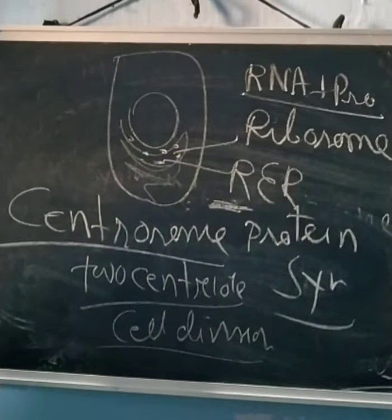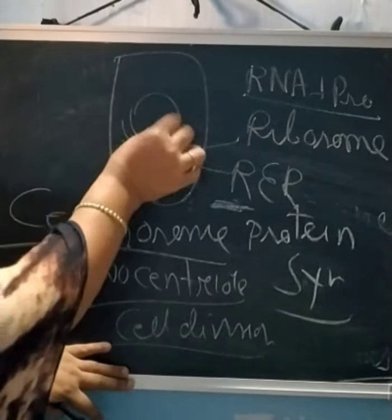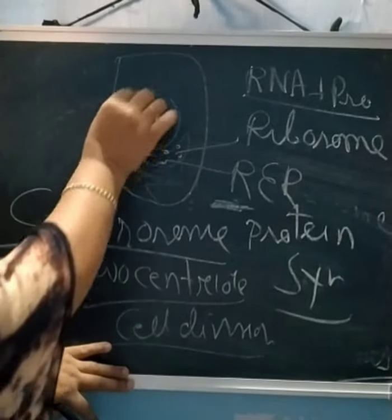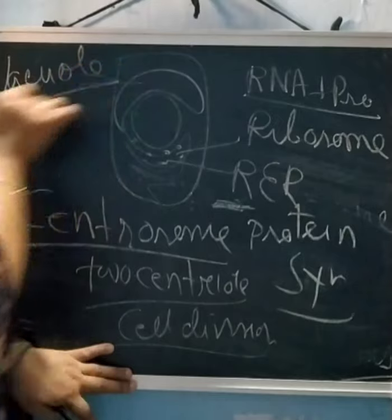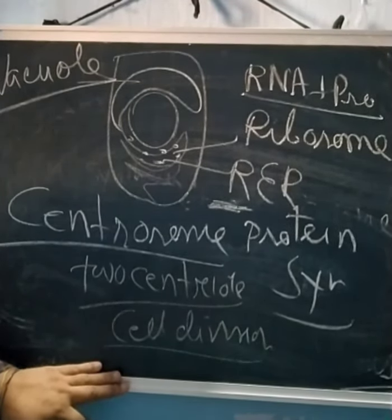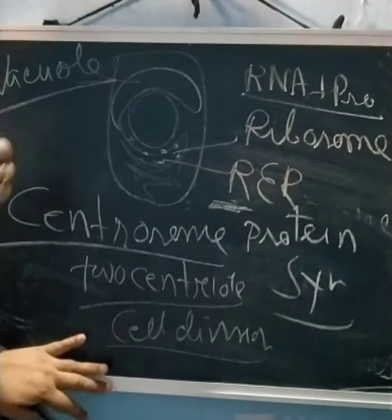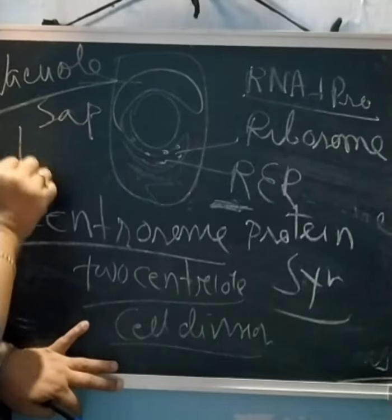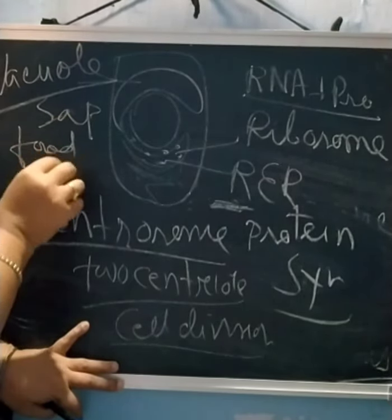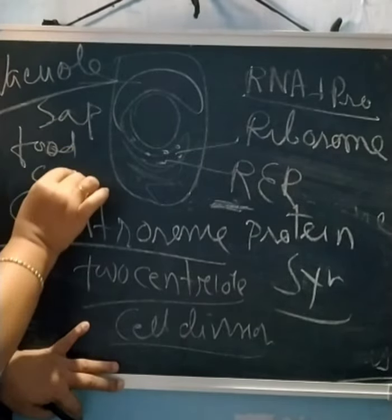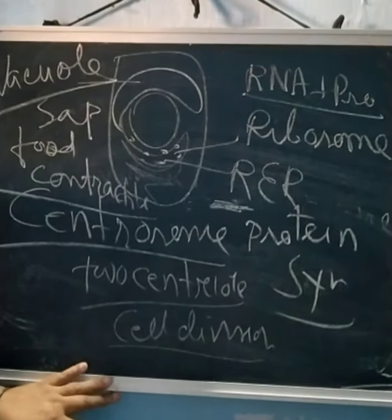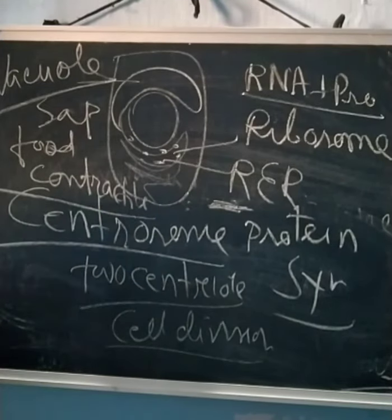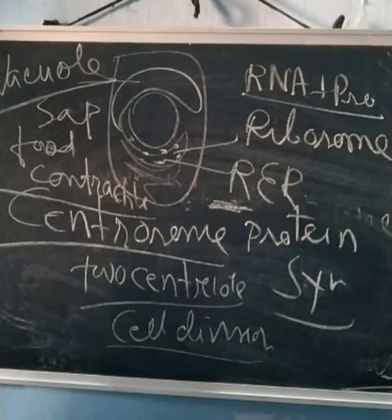Vacuoles are large in plant cells. The function of vacuoles is to store food. Vacuoles can be of three types: sap vacuoles, food vacuoles, and contractile vacuoles. The contractile vacuole is a special type seen in organisms like Amoeba and Paramecium, where it expels excess water from the cell.